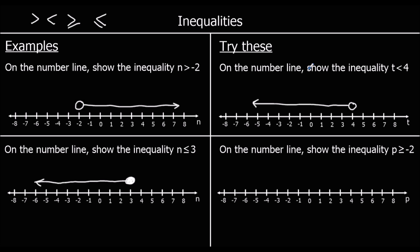And the second one: on the number line, show the inequality p is bigger than or equal to negative 2. So we're at negative 2, it can equal negative 2, so we colour that in. And on the bigger side, we draw the arrow. And there is our inequality.